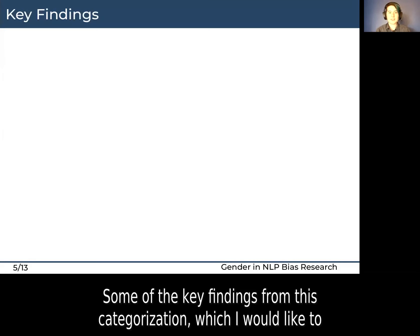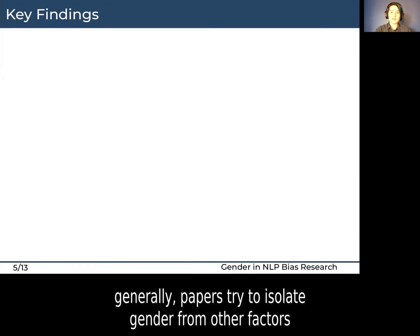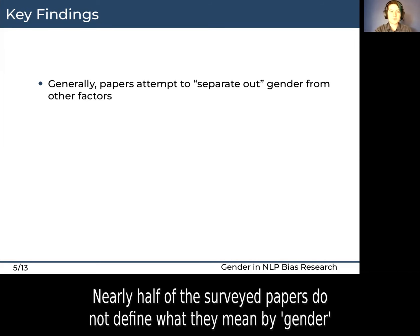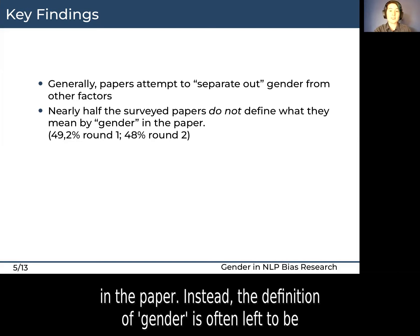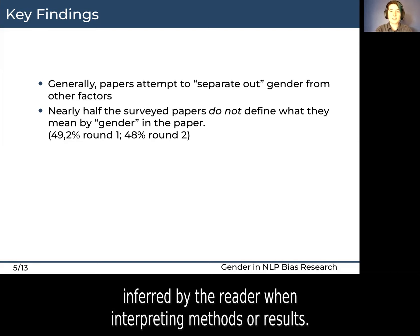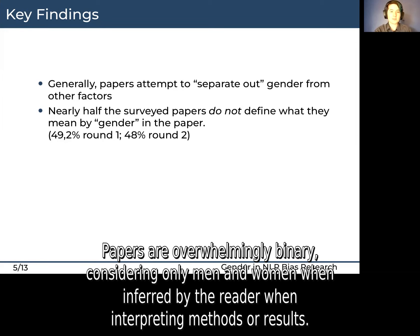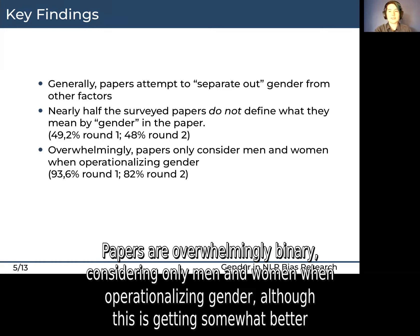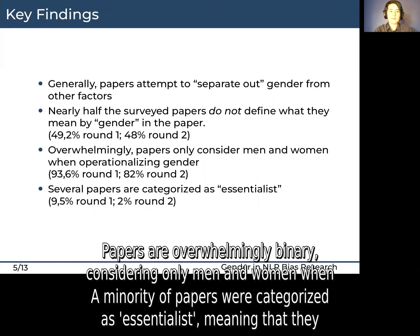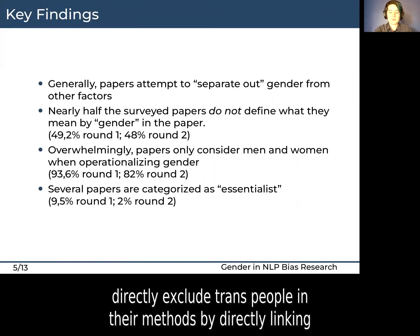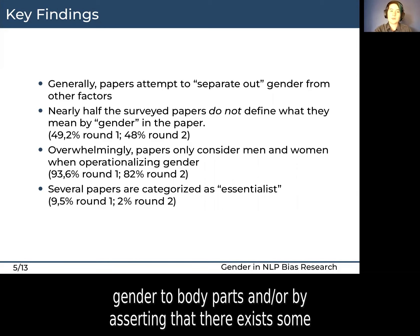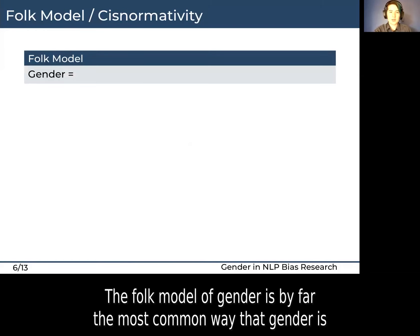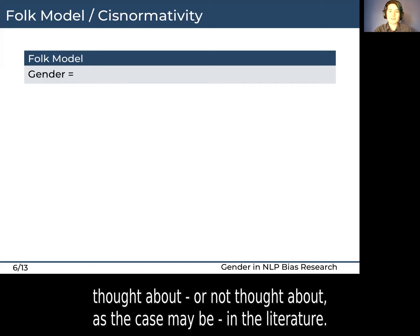Some of the key findings from this categorization are that generally papers try to isolate gender from other factors, such as race, class, or religion. Nearly half of the surveyed papers do not define what they mean by gender in the paper — instead, the definition of gender is often left to be inferred by the reader when interpreting methods or results. Papers are overwhelmingly binary, considering only men and women when operationalizing gender, although this is getting somewhat better. A minority of papers were categorized as essentialist, meaning they directly exclude trans people in their methods by directly linking gender to body parts and/or by asserting that there exists some fundamental difference between men and women. The folk model of gender is by far the most common way that gender is thought about — or not thought about — in the literature.